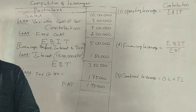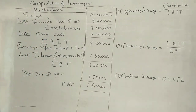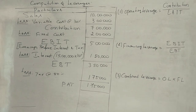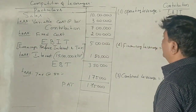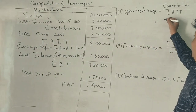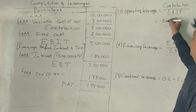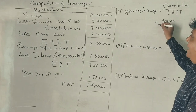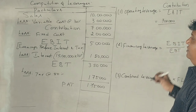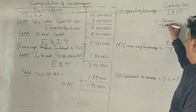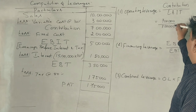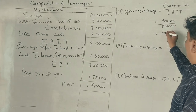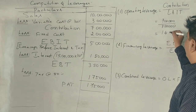Now let us calculate the leverages. For Operating Leverage: Contribution is 7 lakhs divided by EBIT of 5 lakhs, which gives 1.4 times.